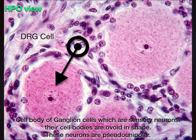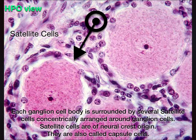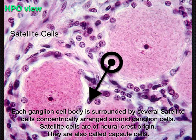At HPO, we can now see the cell bodies of ganglion cells, which are sensory neurons. Their cell bodies are ovoid in shape, and these neurons are pseudounipolar. Each ganglion cell body is surrounded by several satellite cells, concentrically arranged around the ganglion cells. Satellite cells are of neural crest origin and are also called capsule cells.